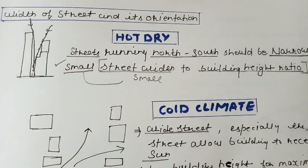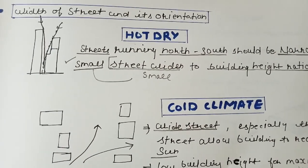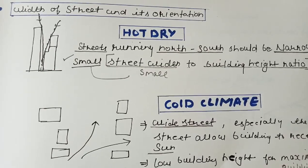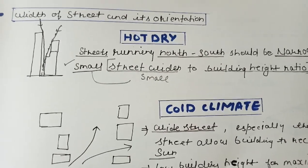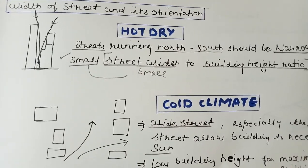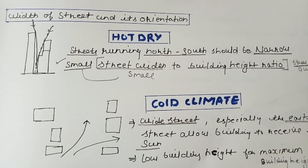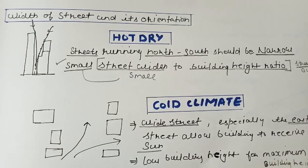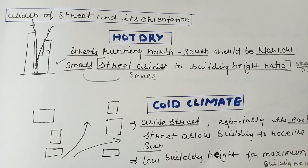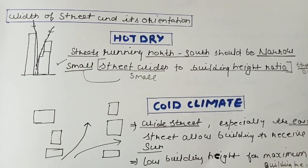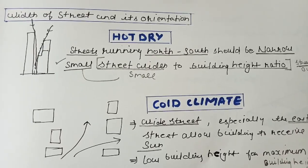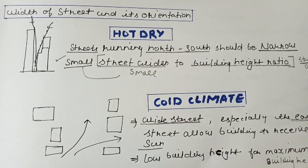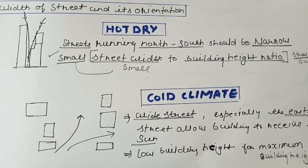The second point is the width of the street and its orientation. The width of streets matters while we plan the building, and the orientation of the street also matters. In hot dry climates, the north-south street should be narrow, and the street width to building height ratio should be small.